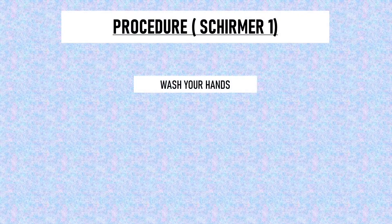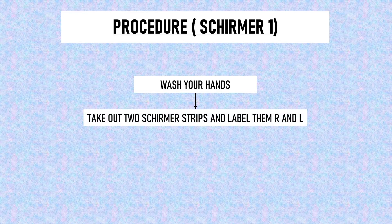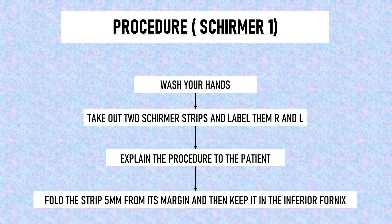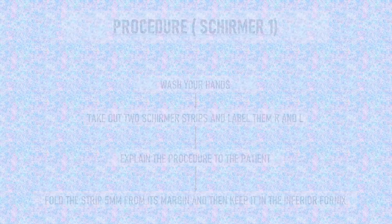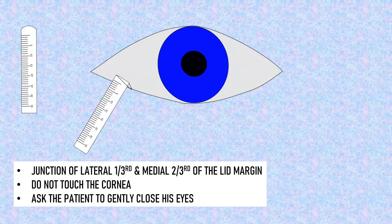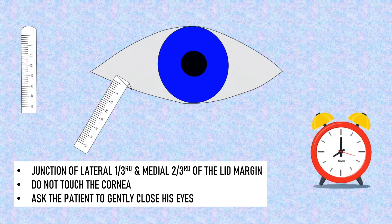To perform Schirmer 1: first, wash your hands. Do not put any eye drop — either an anesthetic or any antibiotic — before Schirmer 1, as that may give false results. Take out two strips from the pack and label them R for right eye and L for left eye. Explain the procedure to the patient; tell them it may be a little uncomfortable but not painful. Fold the strip 5 mm from its margin and place it in the fornix at the junction of the lateral one-third and medial two-thirds of the lower lid. Make sure the strip does not touch the cornea. Ask the patient to gently close their eyes — the eyes must not be squeezed. After 5 minutes, remove the strips and record the reading.